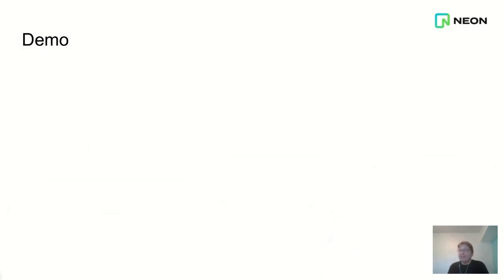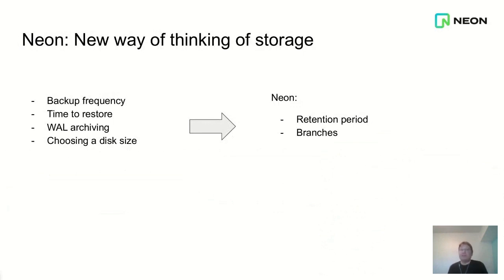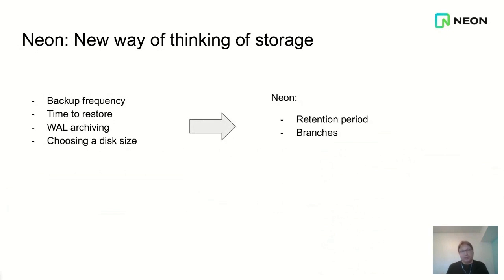So there's no distinction between new and old data — it's all just storage. It's up to the compute node to request: if it's a primary node, it asks for the most recent versions of pages; if it's a backup or restore operation, you request the older versions. This changes the way you think about storage. Previously, you had to think about how often to take a backup, how long restoration takes, how much disk you need for the primary and replicas, and how long it takes to build those replicas.